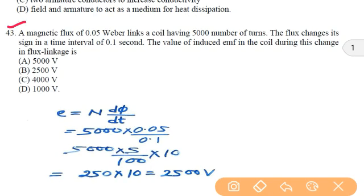In the next question, a magnetic flux of 0.05 weber links a coil having 5000 number of turns, the flux changes its sign in a time interval of 0.1 second. The value of induced EMF in the coil during this change in flux linkages.